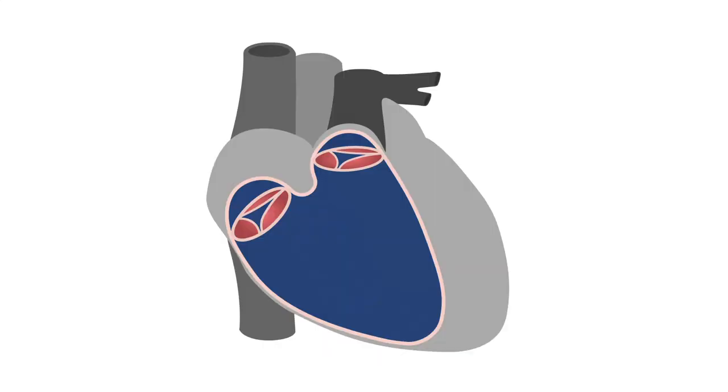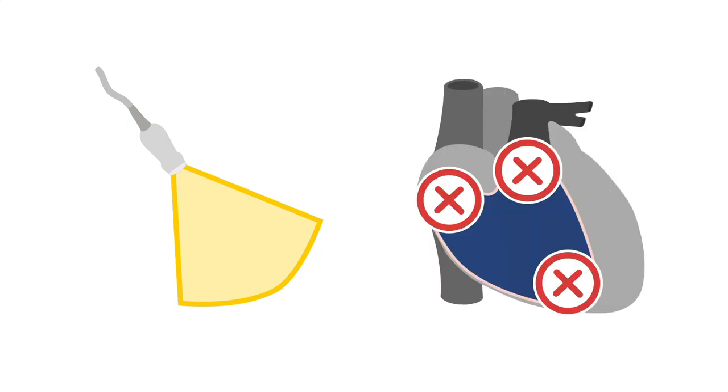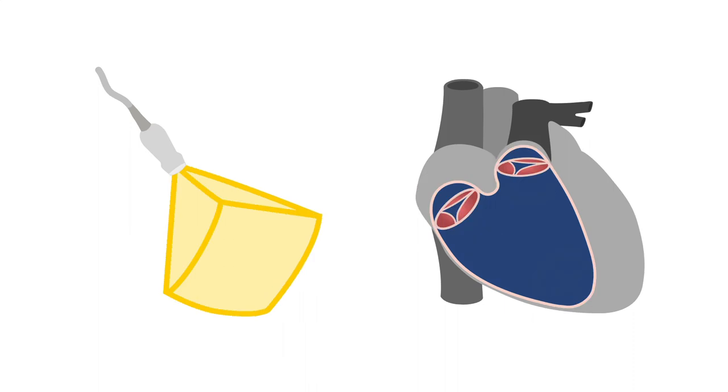The right ventricle also has three different, well-defined regions: the inflow, the outflow, and the apical region. Using 2D echo, these regions cannot be seen at the same time, but they can be seen adequately using 3D echo.